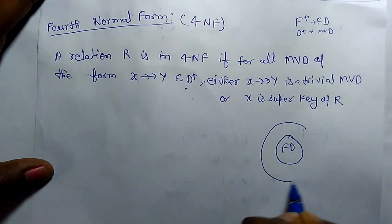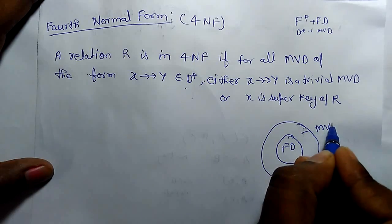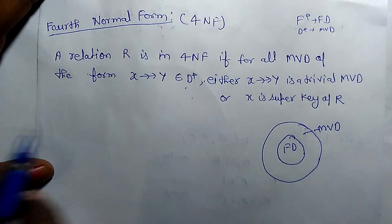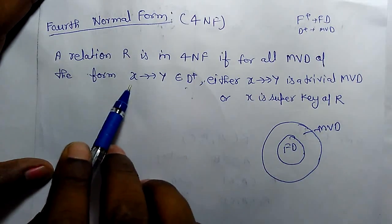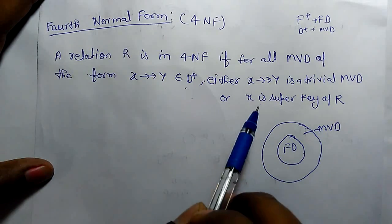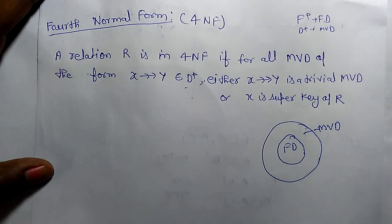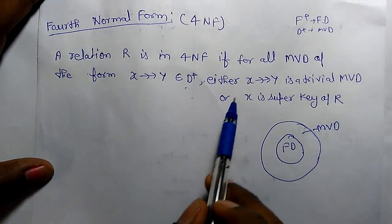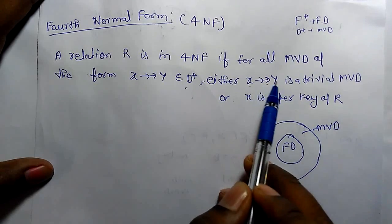If there is a multivalue dependency, we can find it. If x multivalue determines y, there should be two conditions in R. If it is solved, it is in 4NF. Either x multivalue determines y is a trivial multivalue dependency